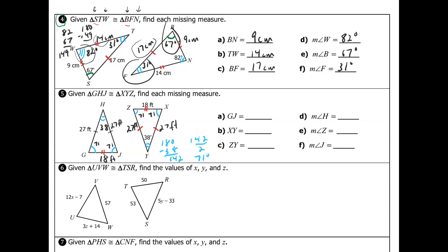Filling in the answers: segment GJ is 18 feet, segment XY is 27 feet, segment ZY is also 27 feet, angle H is 38 degrees, angle Z is 71 degrees, and angle J is also 71 degrees.